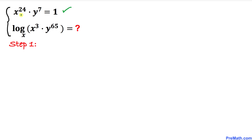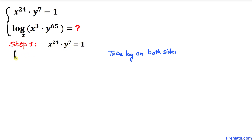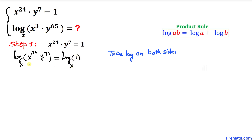Let's focus on the first equation: x power 24 times y power 7 equals 1. We are going to take the log on both sides with base x — log base x of x power 24 times y power 7, and log base x of 1 on the right hand side. Now let's apply the product rule: log(a·b) = log(a) + log(b). So the left hand side becomes log base x of x power 24 plus log base x of y power 7, and the right hand side equals 0, since log of 1 is always 0.